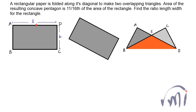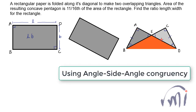We have to find the ratio between length and breadth. When we see this pentagon properly, here we have two triangles — triangle A, B, E and triangle E, C, D. This side is equal to this side; both of them are equal to the breadth of the rectangle, and this angle is 90 degrees. This angle is equal to this angle — vertically opposite angles — and that is why the remaining angles will also be equal. So triangle A, B, E is congruent to triangle C, D, E.